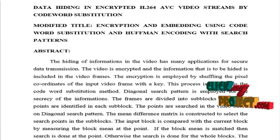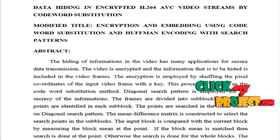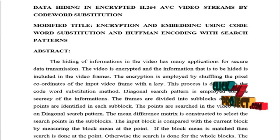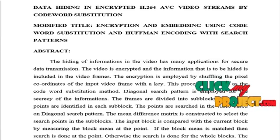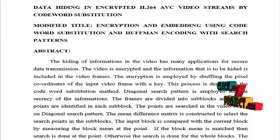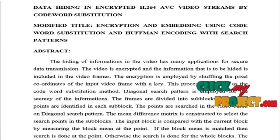The process is repeated until the search is done over all the frames in the video. The encoding process is employed using Huffman transformation so that the encrypted bits are reallocated and the original information cannot be retrieved without the knowledge of the authorized key from the user.